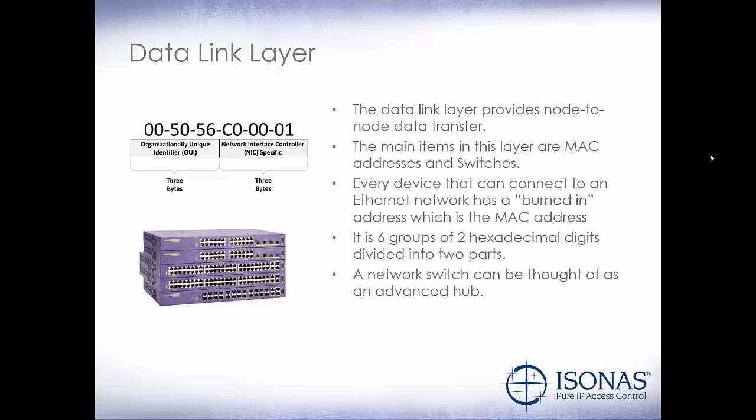Next, we'll move to the data link layer. The data link layer provides node-to-node data transfer. The main items in this layer are MAC addresses and switches. Every single device that can connect to an Ethernet network has a burned-in address, which is the MAC address. Your phones, mobile devices, and PCs all have it — anything that connects to the network has a MAC address burned into it. It is six groups of two hexadecimal digits divided into two parts: the organizationally unique identifier, which is basically the manufacturer, and the network interface controller, which is the specific code unique to just that device.